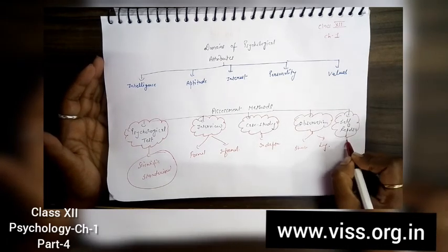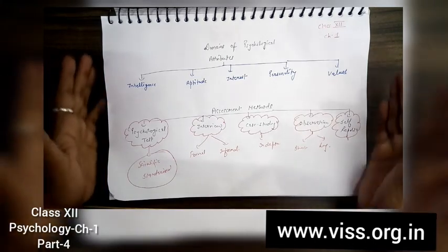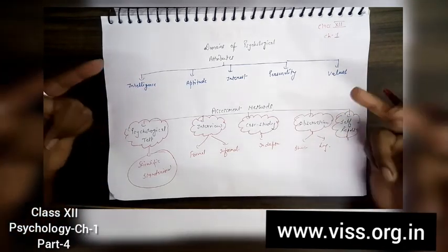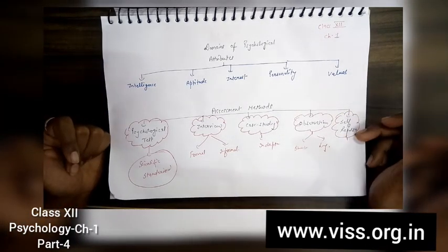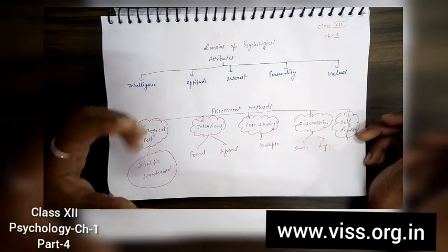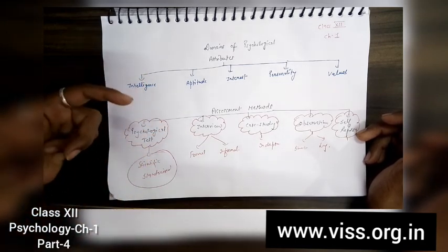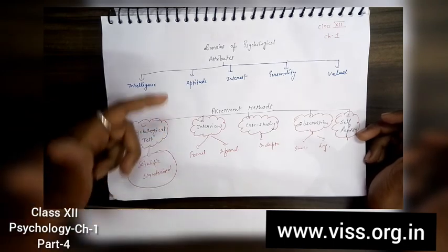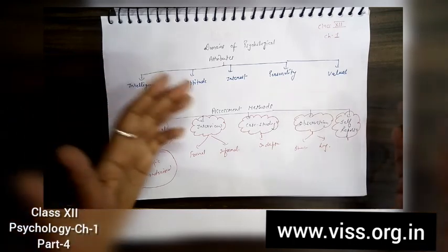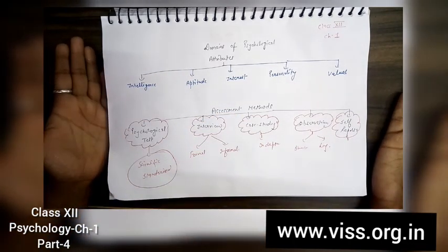Next is your self-report. Self-report means you are taking information by the person themselves about their thinking, about their psychology. Here you can ask their values, their beliefs, their own experiences, and you can give them certain kinds of forms to fill in which they answer questions which are related to their lifestyle, their experiences, their behavior - everything. After reading those self-reports, you can assess the personality of a person.